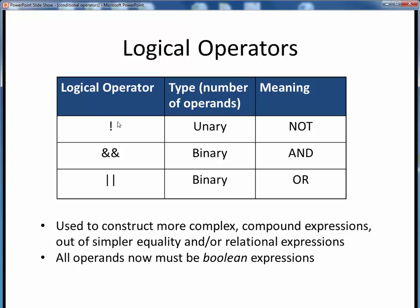Finally, here are the last three conditional operators in Java: the three logical operators. These operators are used to construct more complex, compound logical expressions by gluing together simpler expressions formed with equality and/or relational operators. We have the three basic Boolean operators — not, and, and or — which are at the heart of all computing logic. Note that the not operator is a unary operator, which means that it is applied to only one single operand, whereas the other two are binary operators, each taking two operands. The key difference with these three operators is that their operands must now be Boolean values or expressions, not numerical ones. So we use these operators to join together simpler equality or relational expressions, which themselves yield true-false Boolean results.